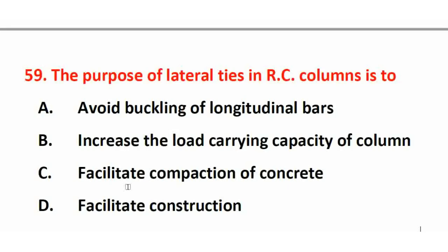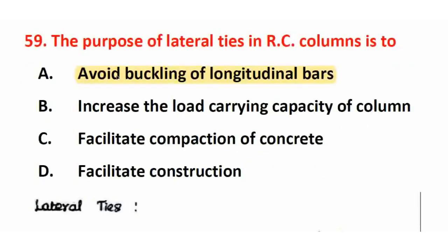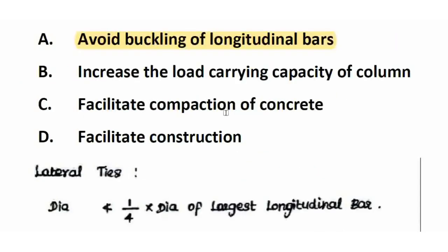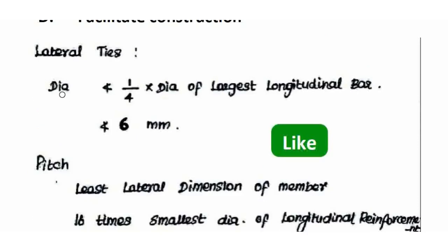Next question: The purpose of lateral ties in an RC column is? The right answer is option A — to avoid buckling of longitudinal bars. In RC columns, lateral ties prevent buckling of longitudinal bars. The diameter of lateral ties should not be less than 1/4 of the diameter of the largest longitudinal bar and not less than 6 mm.